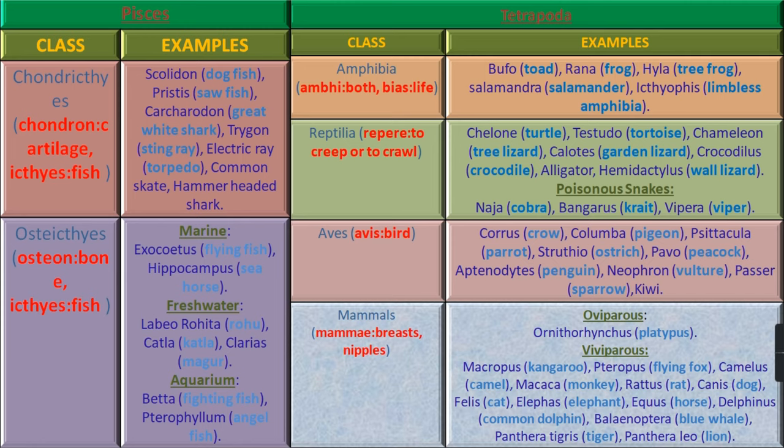Now let's see the examples of superclass Tetrapoda, class Amphibia — where Amphi means Both and Bios means Life, that is these animals live both on land as well as in water. Examples are Bufo (Toad), Rana (Frog), Hyla (Tree Frog), Salamandra (Salamander), and Ichthyophis (Limbless Amphibia).